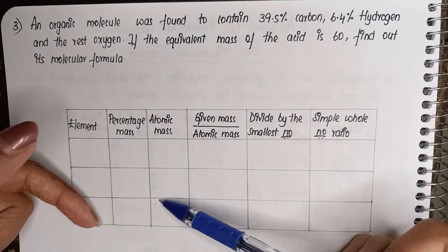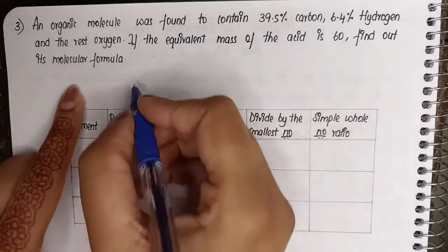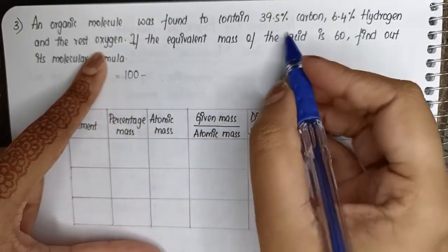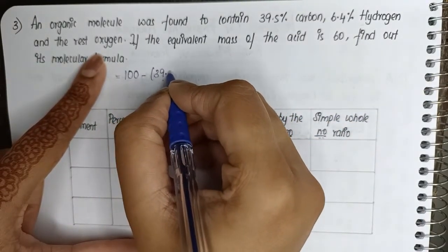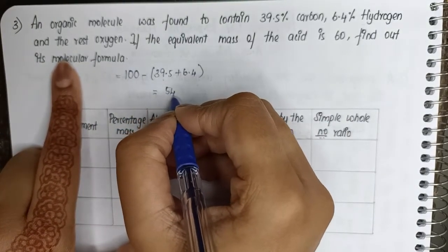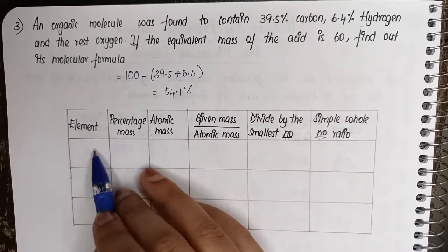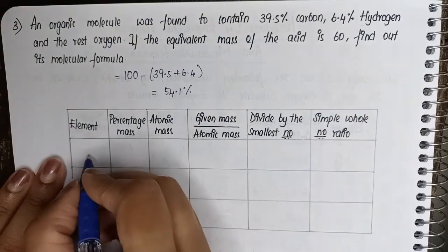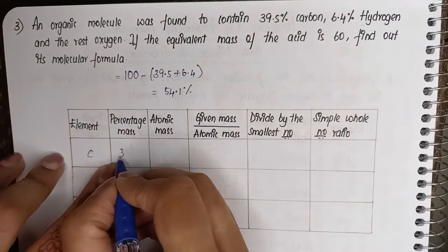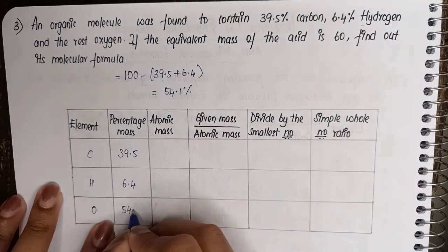First, let's find out the percentage of oxygen, then we will use the table and calculate the empirical formula, then use the given mass to calculate the molecular formula. To find the percentage of oxygen, you do 100 minus the sum of carbon and hydrogen: 39.5 plus 6.4 equals 45.9, so 100 minus 45.9 gives 54.1%. That is the percentage of oxygen. Now let's fill the table: carbon 39.5%, hydrogen 6.4%, oxygen 54.1%.